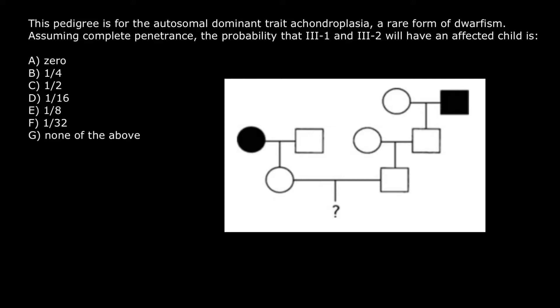Assuming complete penetrance, the probability that III-1 and III-2 will have an affected child is, and you have to choose one of these answers.